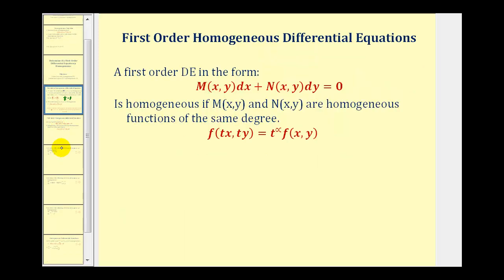One last thing to mention: if the first order DE is written in differential form, it's homogeneous if function M and function N are homogeneous functions of the same degree, or they satisfy the definition we saw in the previous video on homogeneous functions. The important part is that both M and N must satisfy that equation where alpha is the same exponent.